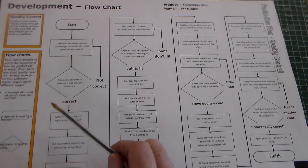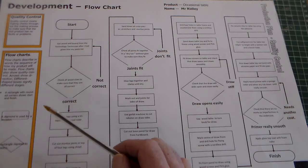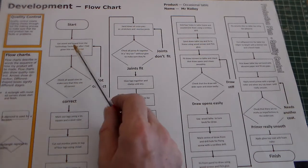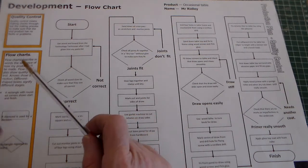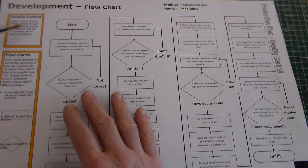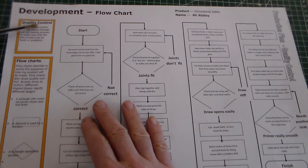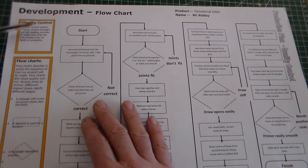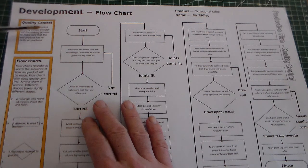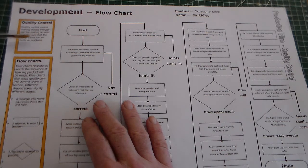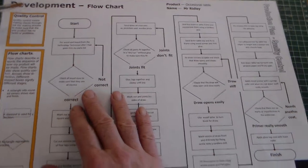The reason to create a flow chart is to show planning and stages, and to highlight and imply where quality control is. Quality control means making checks throughout the making process to make sure that the end product has no faults or problems.